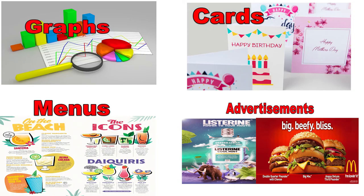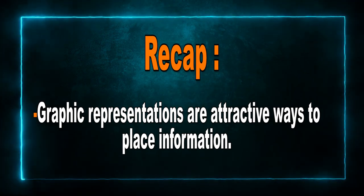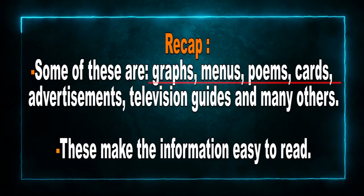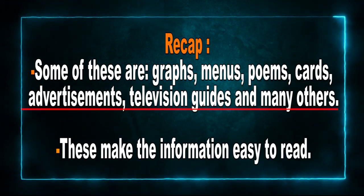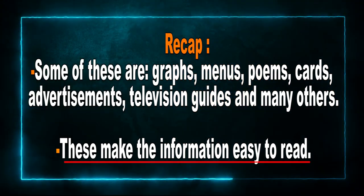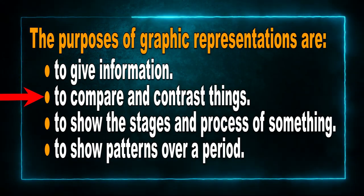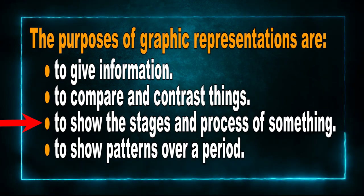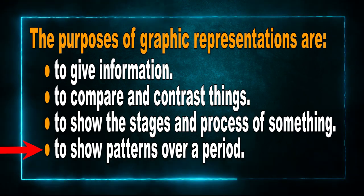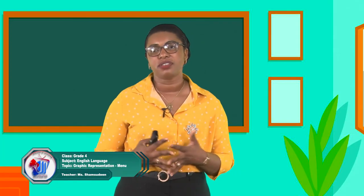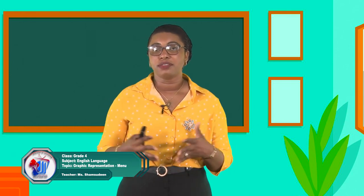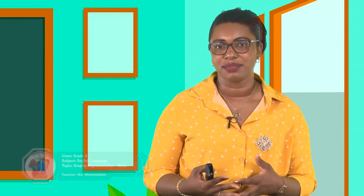Were you able to read and understand the various layouts of those forms of graphical representations we looked at today? Let's recap. Graphic representations are attractive ways to place information. Some of these are graphs, menus, poems, cards, advertisements, television guides, and others — making information easy to read. The purposes of graphical representations are to give information, compare and contrast things, show the stages of a process, and show patterns over a period of time. There are a few more forms we will go through, so be sure to follow the guide for our next lesson. It's always a pleasure to be with you on the Learning Channel. Until next time, I'm Misham Shadeen saying goodbye. Bye-bye.